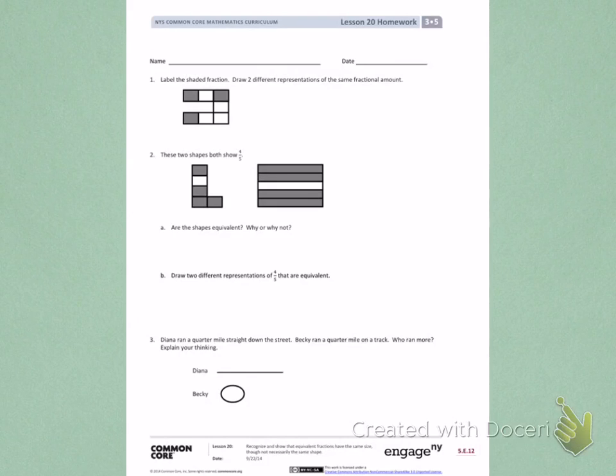Number 1. Label the shaded fraction. Draw two different representations of the same fractional amount. When I look at this fraction, I see that there are three parts that are shaded. To find the denominator, I need to count all the equal parts.